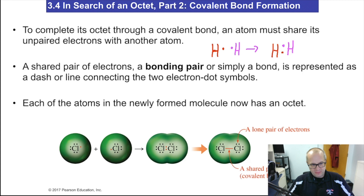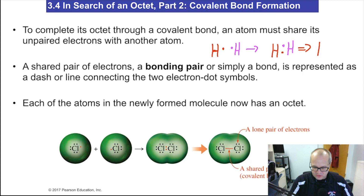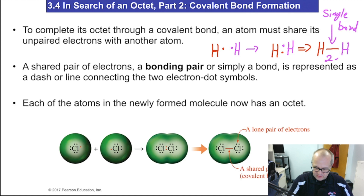That shared pair of electrons is called bond pairing — or simply, a bond. So now they'll make a bond, which looks like this: H line H. That is a single bond, and that counts for two electrons. A single bond counts for two electrons.